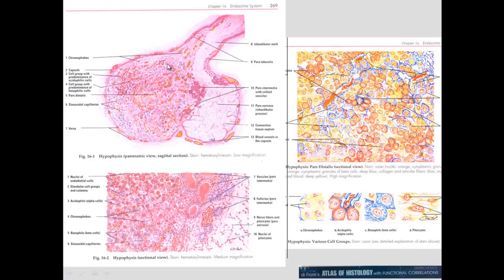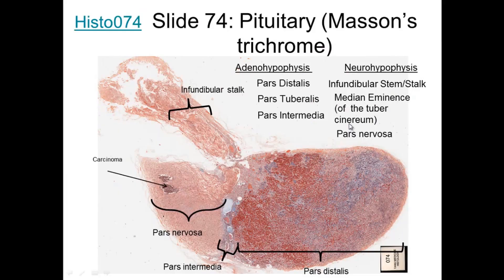We can see the pituitary here — the pars distalis, pars nervosa, pars tuberalis, and pars intermedia. All these are different parts of the endocrine system. In the pituitary you have acidophils, basophils, and chromophobes. On this particular specimen we see the pars distalis, the pars nervosa, the infundibulum stalk, and pars tuberalis. So the adenohypophysis includes the pars distalis, tuberalis, and intermedia; and the neurohypophysis includes the infundibulum stalk and the pars nervosa.